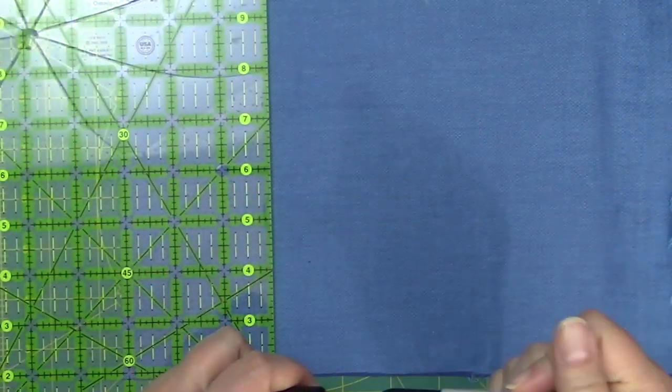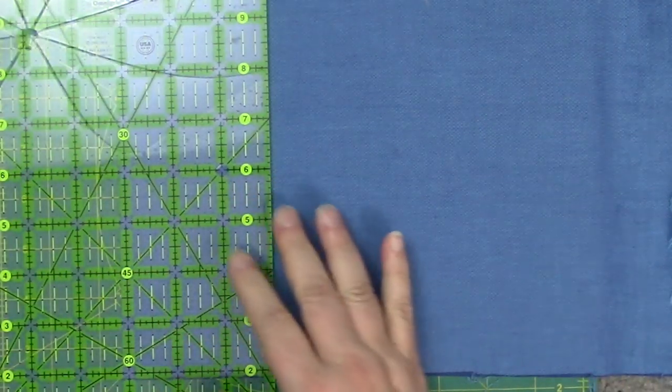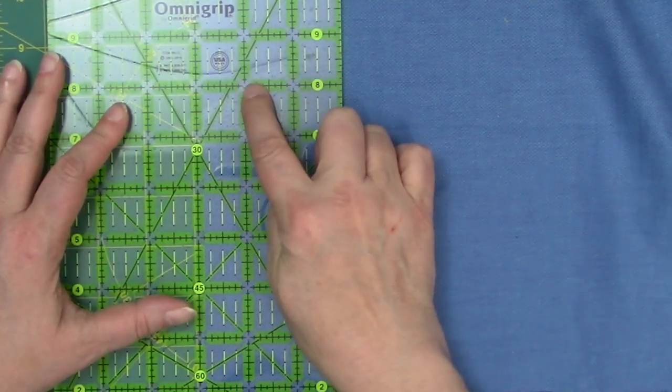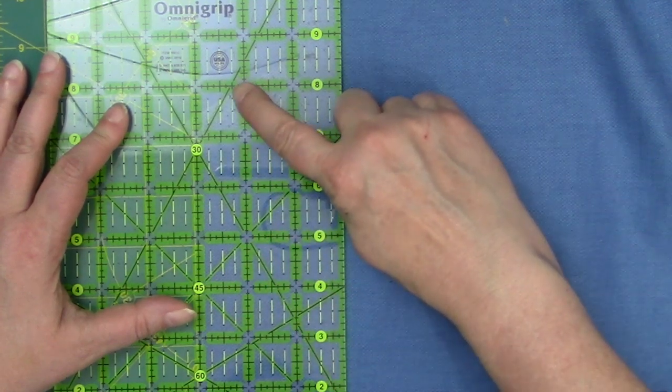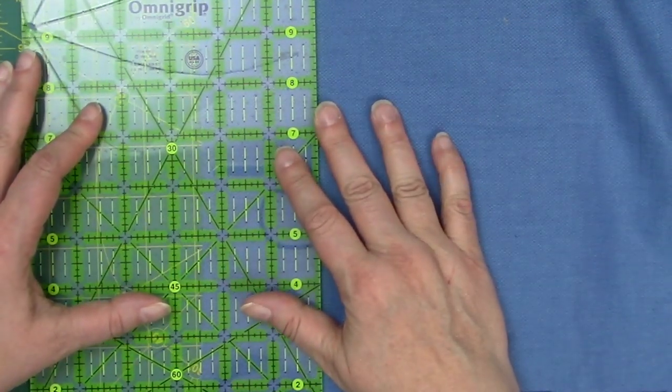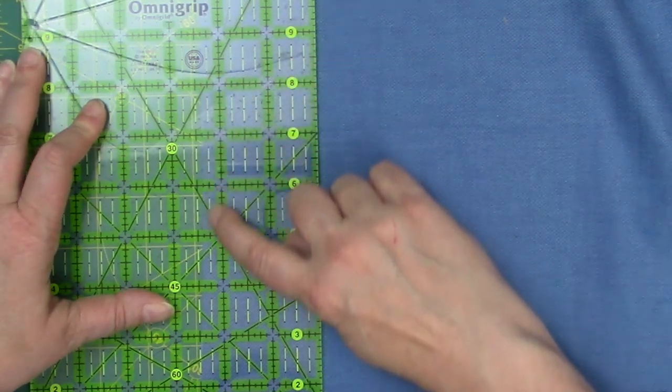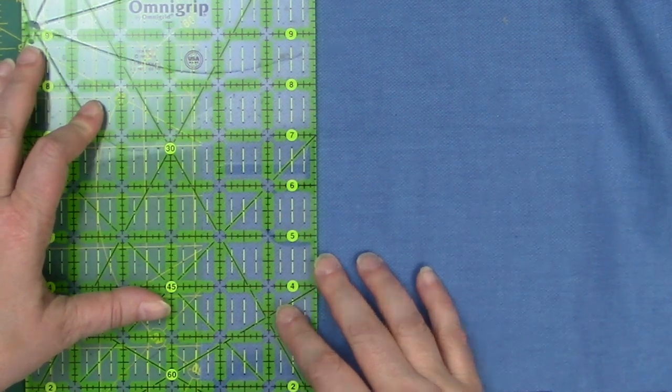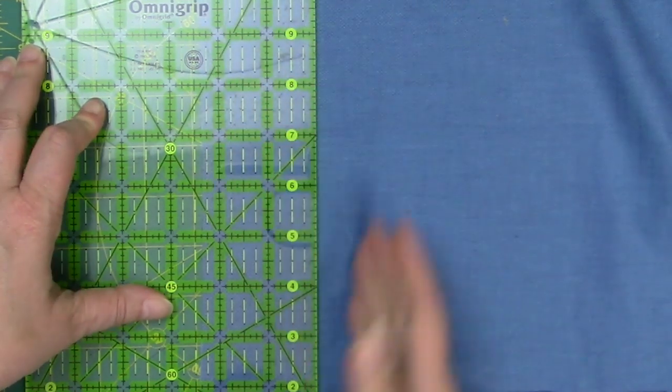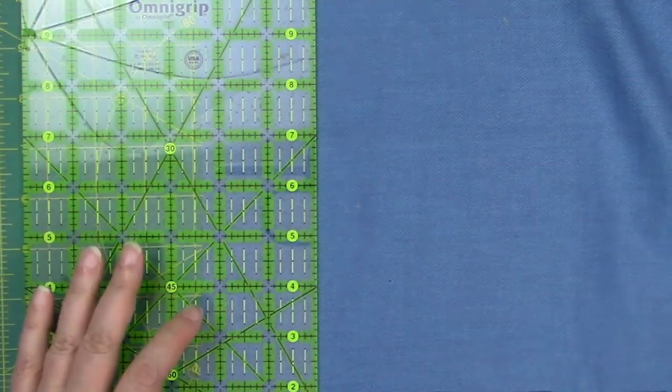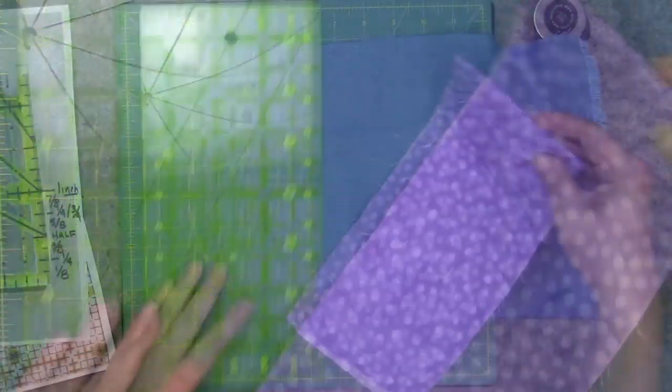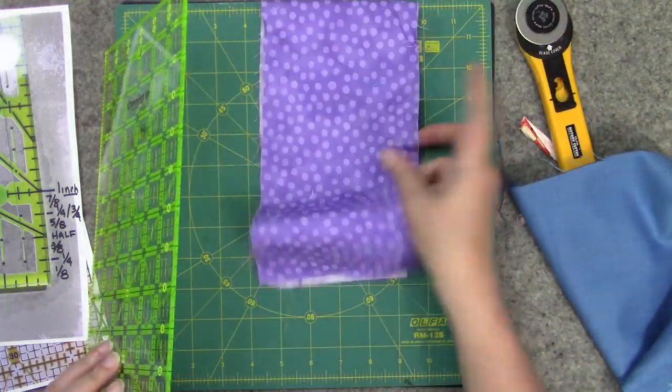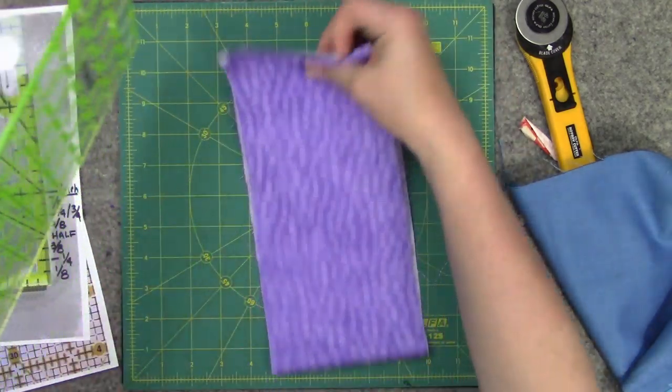So if I was doing two and three-eighths, I'm going to measure two inches and then I'm going to go one, two, three - that's my three-eighths line, and I'm just going to make sure that little line is lined up all the way down, and then I would cut this.